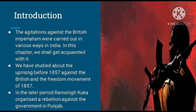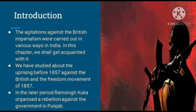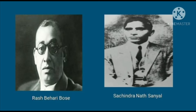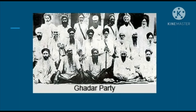The agitations against British imperialism were carried out in various ways in India. Imperialism means when a country controls another country politically or economically against the will of its people. In this chapter we shall get acquainted with these movements. We have studied about the uprising before 1857 and the freedom movement of 1857. In the later period, Ram Singh Kuka organised a rebellion in Punjab. In this chapter we will be talking about the armed revolutionary movement, wherein arms and ammunition like guns and bombs were used — a violent movement which pressurised and disturbed the Britishers.